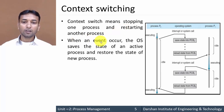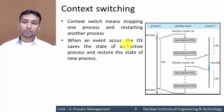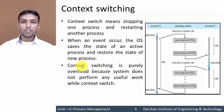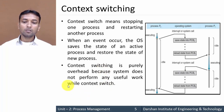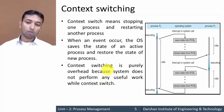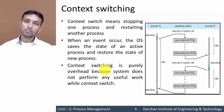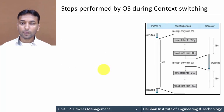When an event occurs, the operating system saves the state of the current running process and restores the state of a new process. Context switching is purely overhead, because whenever it occurs, the system does not perform any useful work during that time. The CPU does not perform any type of computing during context switching.